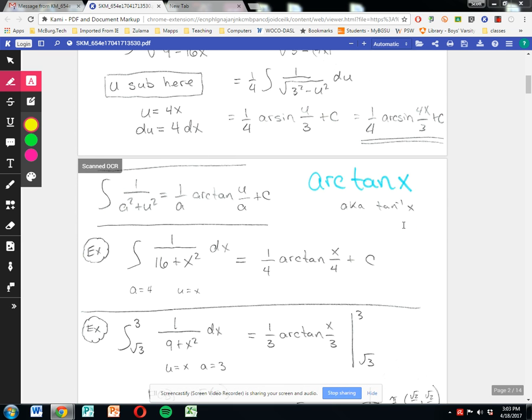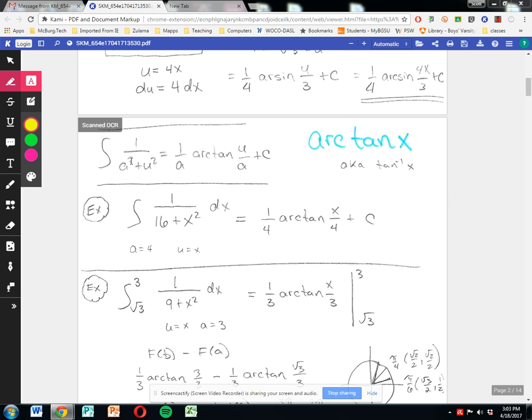Let's move on to arc tan. The general form is 1 over a squared plus u squared, and the answer is 1 over a arc tan u over a plus c. If we deal with 1 over 4 squared plus x squared, then a is 4 and u is x. So I've got 1/4 arc tan x over 4 plus some constant c.